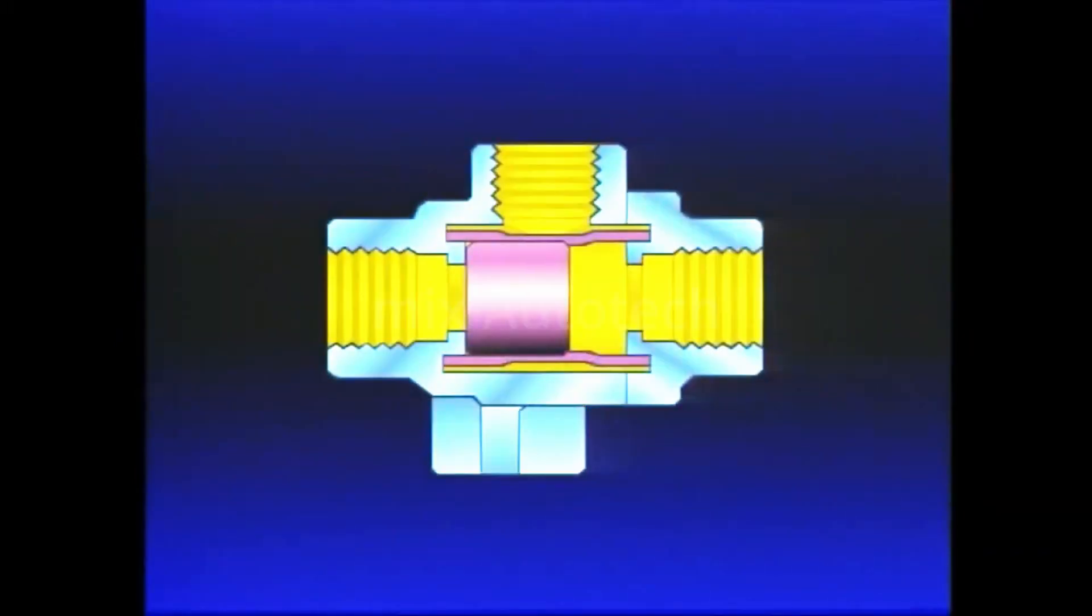The most common double check valve uses a shuttle contained in a guide which is installed in the body. The DC-4 has two inlet ports and one delivery port.